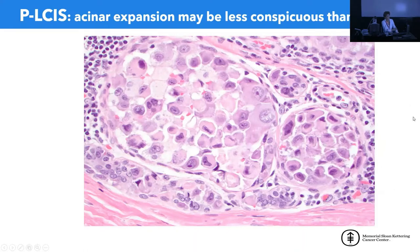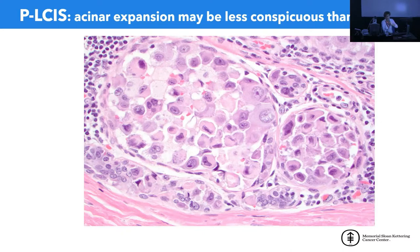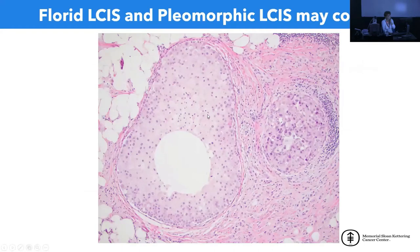The diagnosis of pleomorphic LCIS is based on nuclear features and cytomorphology combined, not on a specific architecture. Even a small focus of just a couple of acini with pleomorphic cells qualifies as pleomorphic LCIS. There is no such thing as pleomorphic atypical lobular hyperplasia. Florid LCIS and pleomorphic LCIS may coexist in the same case, and sometimes we see a transition from one to the other.